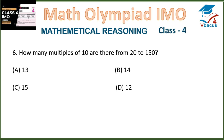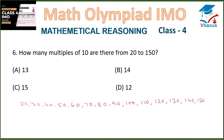Question 6: How many multiples of 10 are there from 20 to 150? We write the multiples and count them: 20, 30, 40, 50, 60, 70, 80, 90, 100, 110, 120, 130, 140, 150 — that gives us 14 multiples from 20 to 150. So option B is correct.